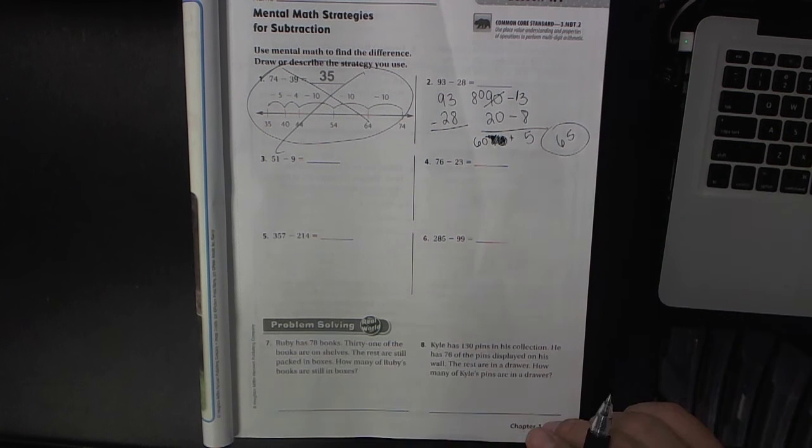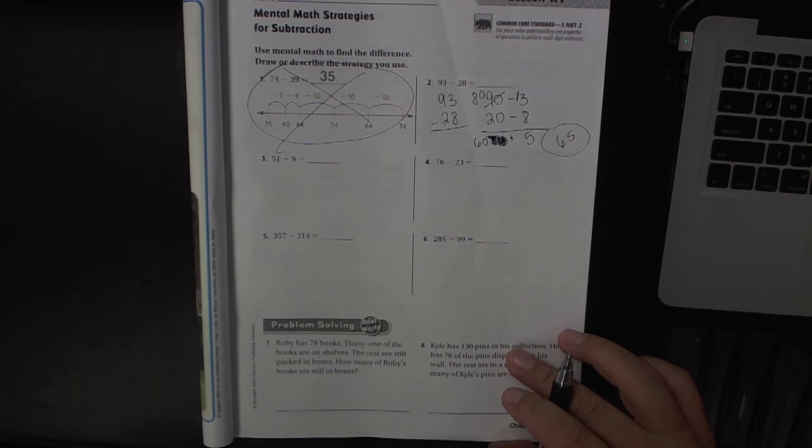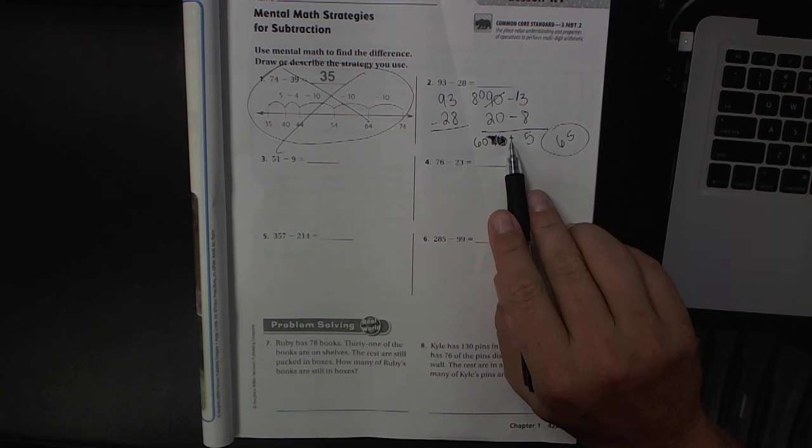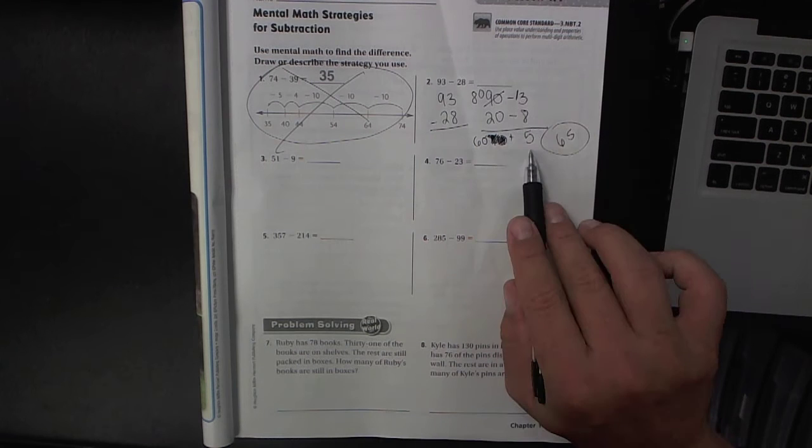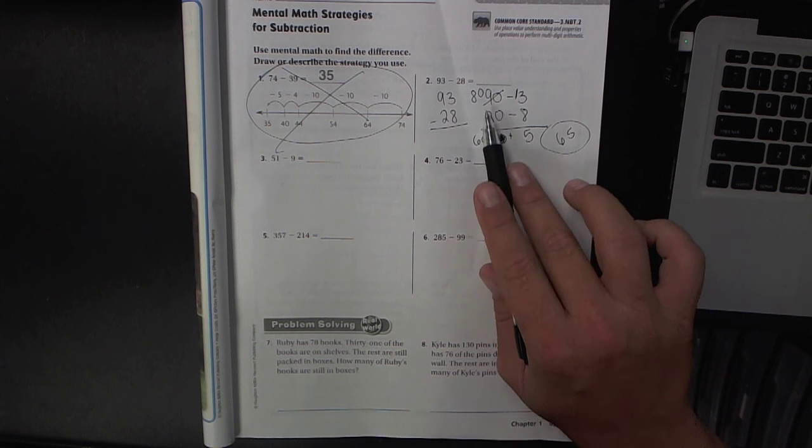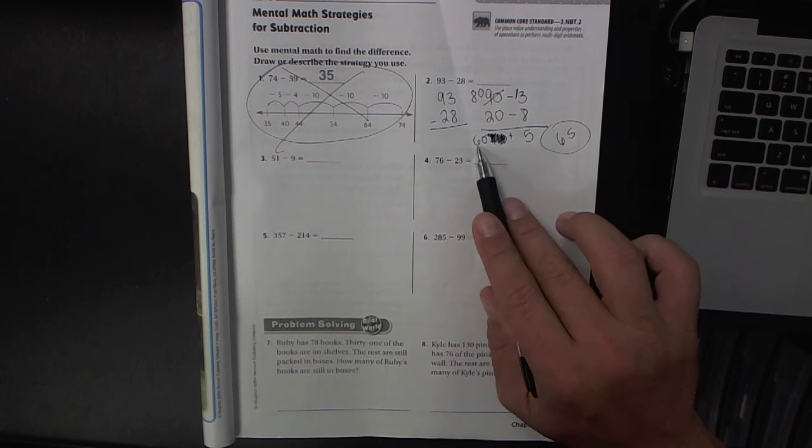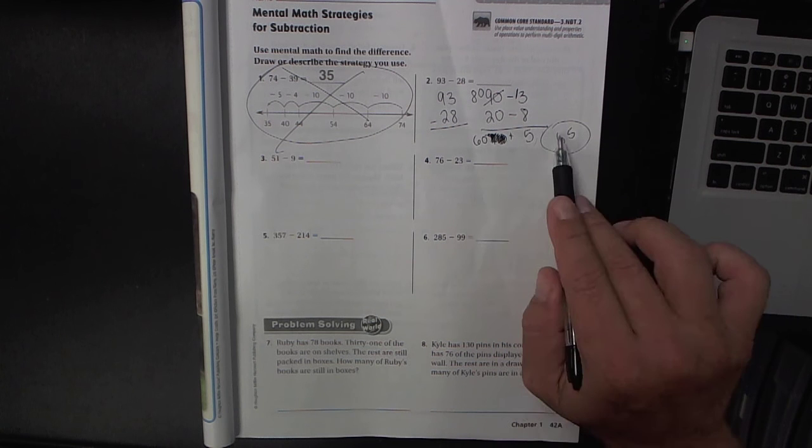Now it is kind of funky that we're adding here at the very end, but you could see why: that 13 minus 8 is 5, 80 minus 20 is 60, and you need to combine these two to get your final answer.